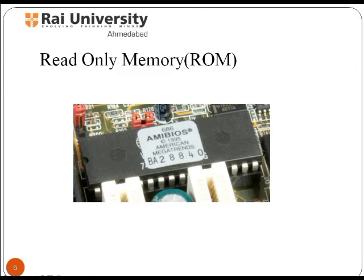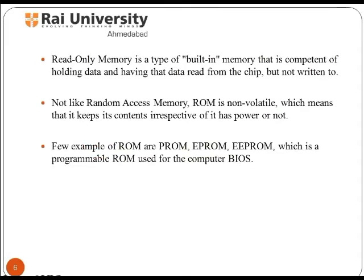Read Only Memory. ROM commonly refers to memory that is read only in normal operation, while reserving the possibility of some way to change it. Read only memory refers to memory that is hard-wired, such as diode matrix and later mask ROM. It is a type of built-in memory capable of holding data and having that data read from the chip but not written to. Other types are EPROM and EEPROM — erasable programmable read only memory and electrically erasable programmable read only memory. These types of memory can be erased and reprogrammed multiple times, though writing takes longer and may require a different procedure than reading.